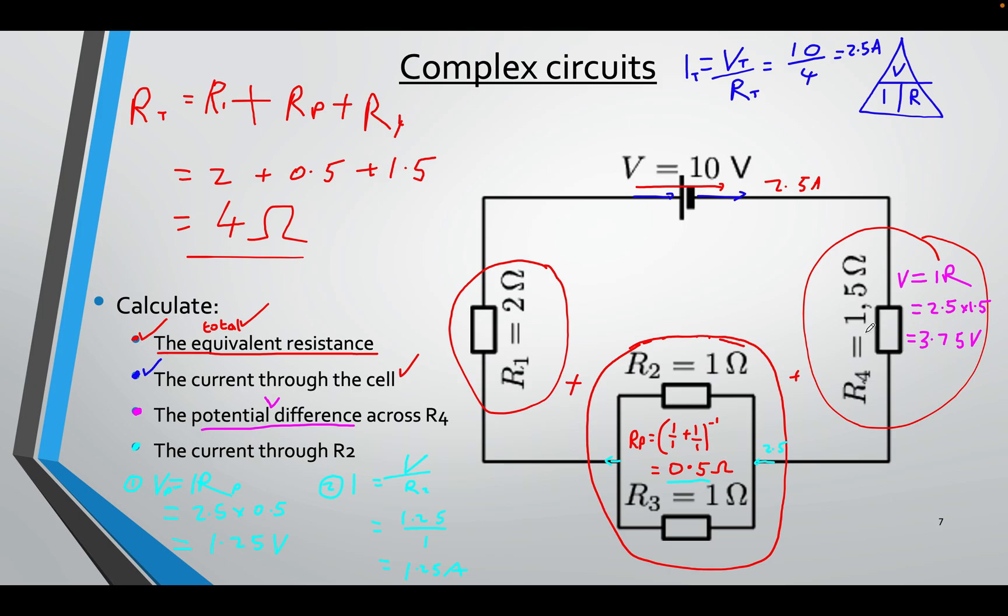I could also use the other formula that I showed you, the VN multiplied by R1 divided by R total. That will also give me it. That means I do not need the current. So there are more than one ways to do this.